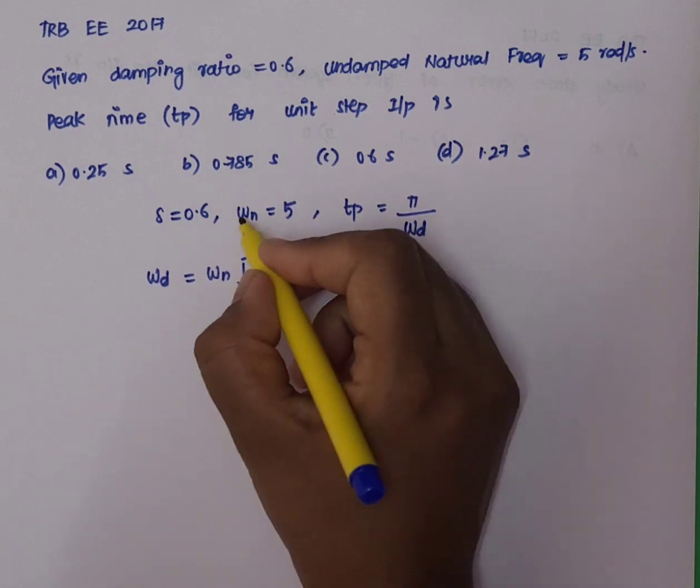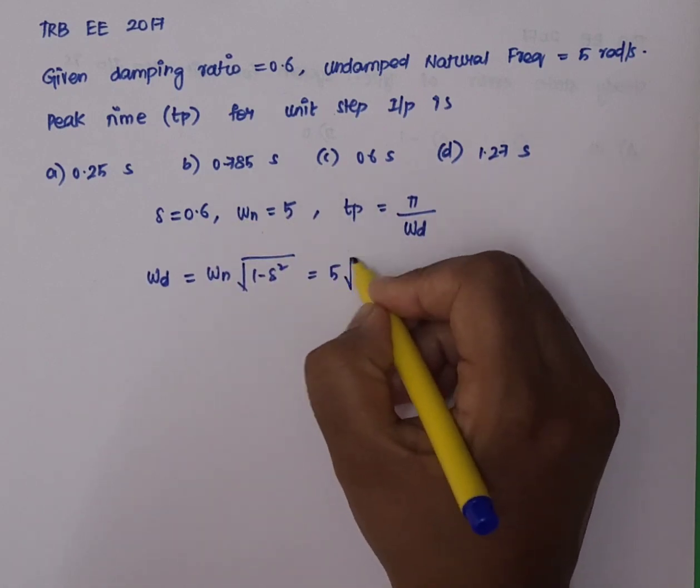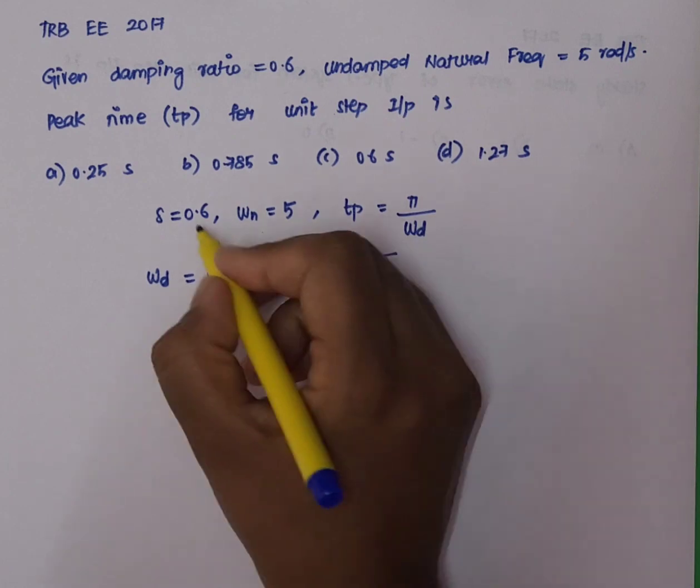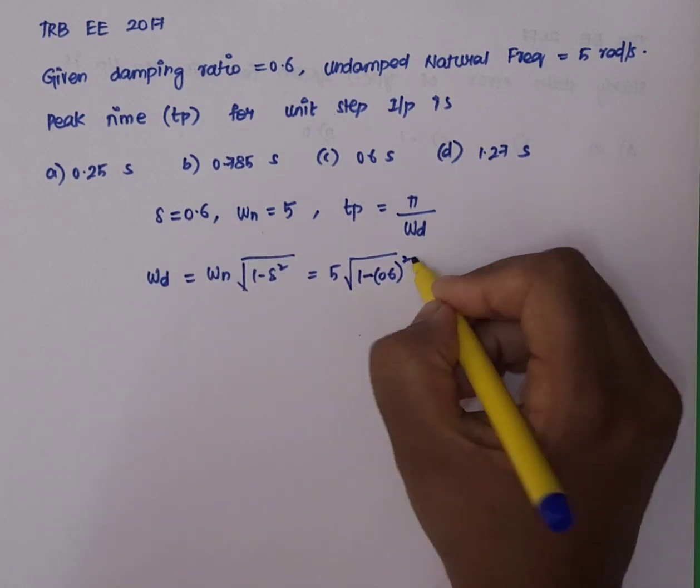So, we substitute these values. Omega N is equal to 5 into square root of 1 minus ζ square value 0.6, the whole square.